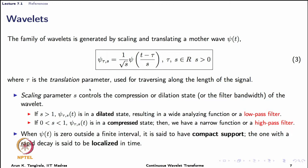Tau is a translation parameter and s is a scaling parameter. The scaling parameter controls the compression or dilation state. If s is greater than 1, the child is in a dilated state which acts as a low pass filter. When the scaling parameter is between 0 and 1, the child is compressed, allowing extraction of high frequency components — it acts as a high pass filter.